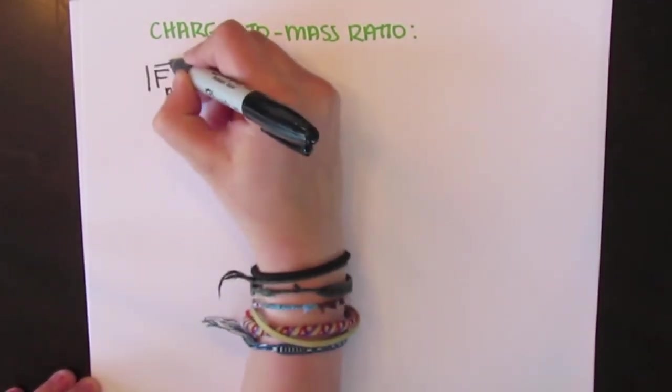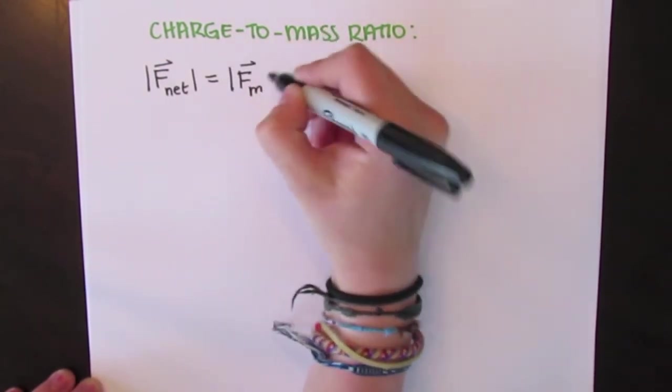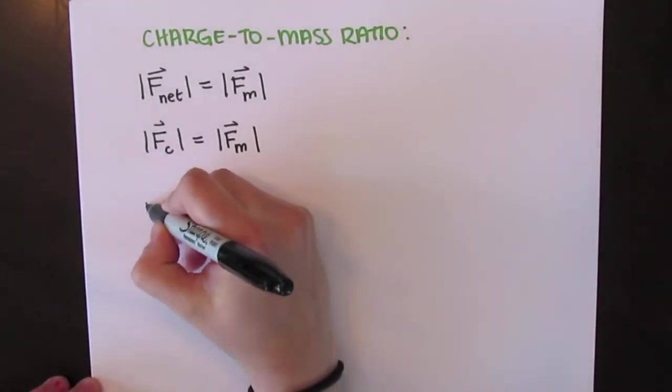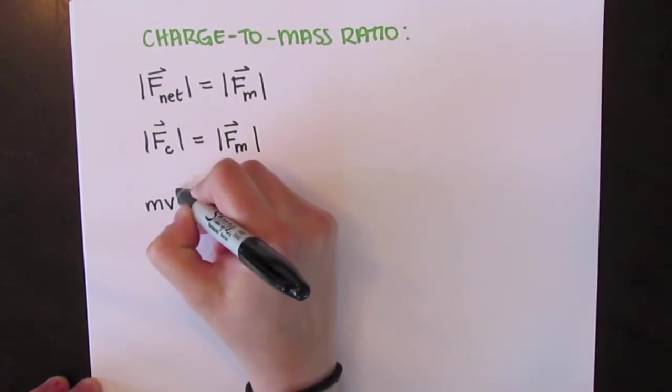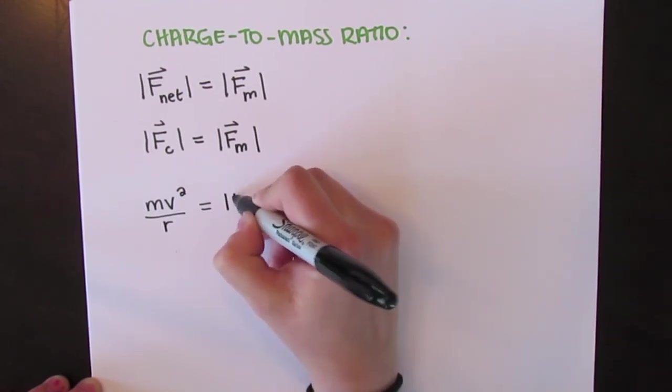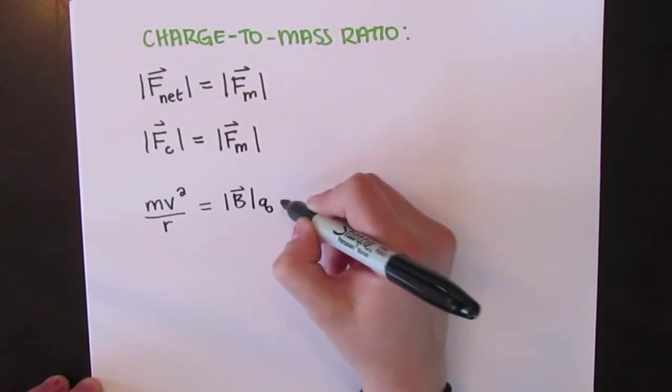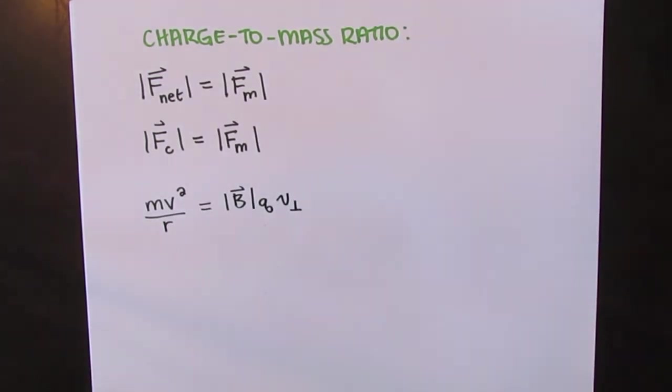The net force is equal to the magnetic force experienced by the electron, as well as the centripetal force. When we substitute in the components of the centripetal force and the magnetic force, we get an equation of the mass of the electron multiplied by the square of its velocity divided by the radius equal to the magnitude of the magnetic field multiplied by the charge of the electron and its velocity perpendicular to the magnetic field.